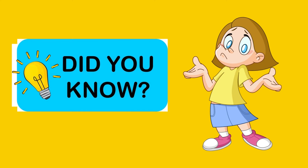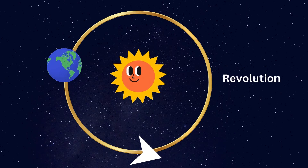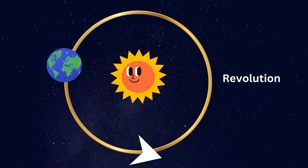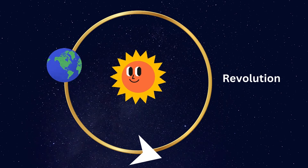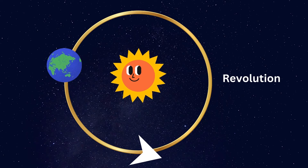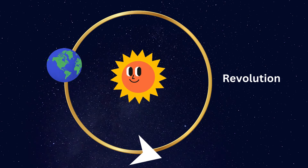My dear students, if the rotation of the Earth makes a day, then what makes a year? The answer is revolution. Although the Earth is rotating on its axis, at the same time it also revolves in an orbit around the sun, which is called revolution.